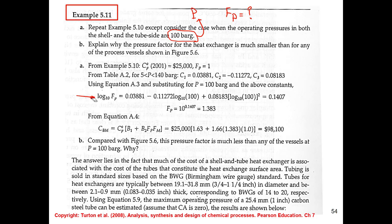We use the same equation but now we have to read the new values of C1, C2, C3 from the table. The material factor is the same, and the base price CP0 at one atmosphere and carbon steel is again the same value we found from the figure — the price is for 2001 and one bar, that's why the factor was one. But now we have a different pressure so we need to correct it.